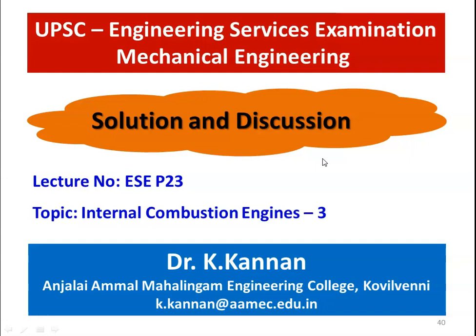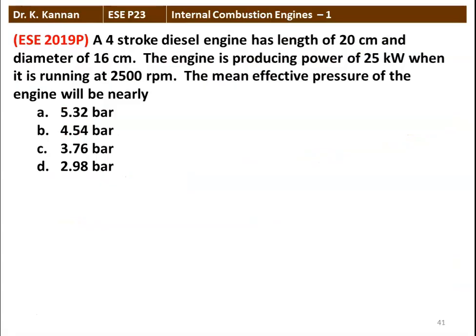This is lecture number 23 in the Preliminary Exam Series. The first question from the 2019 question paper: a 4-stroke diesel engine has length of 20 centimeter and diameter 16 centimeter. The engine is producing power of 25 kilowatt when running at 2500 rpm. The mean effective pressure of the engine will be nearly 5.32 bar, 4.54 bar, 3.76 bar, or 2.98 bar. The correct answer is 2.98 bar.